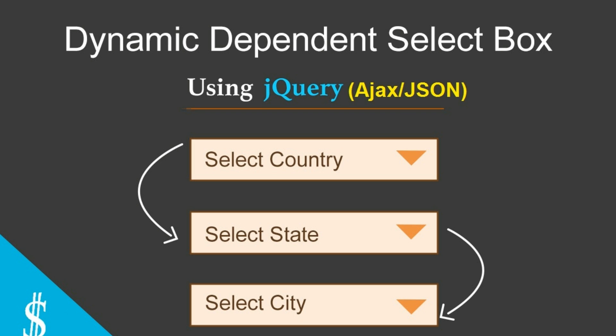For that, we have taken the example of country, state and districts, and we are going to create dependency between these three select boxes. Our desired output should be: if I select a country, it should populate the states inside that country, and when I select the state, it should populate the districts related to that state.